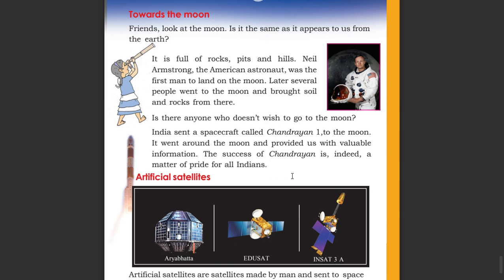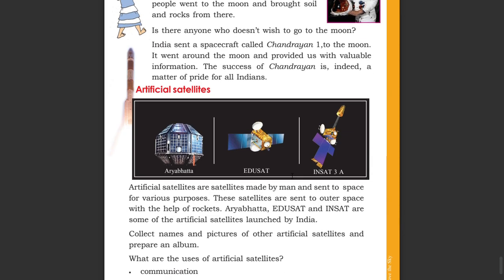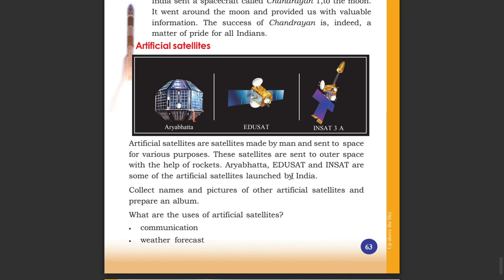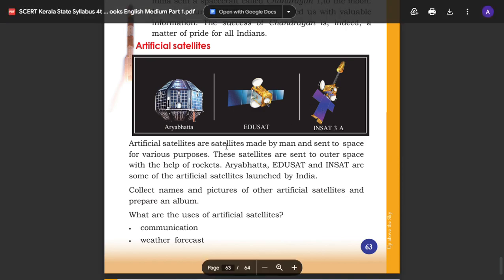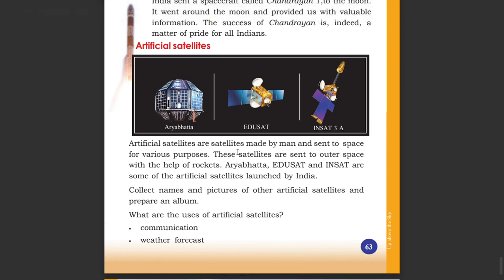Artificial satellites are made by man and sent into space for various purposes. These satellites are sent to outer space with the help of rockets.